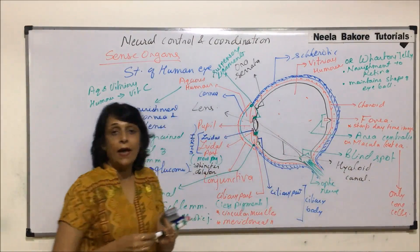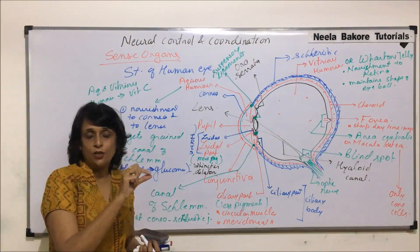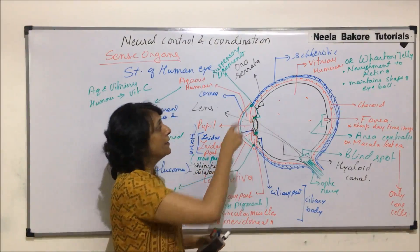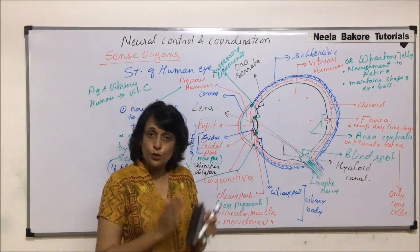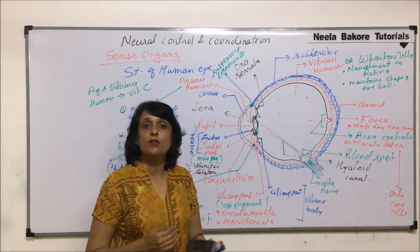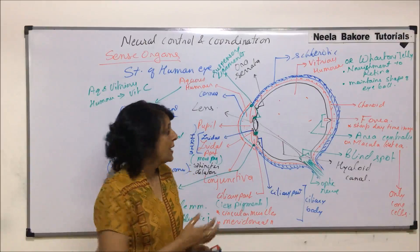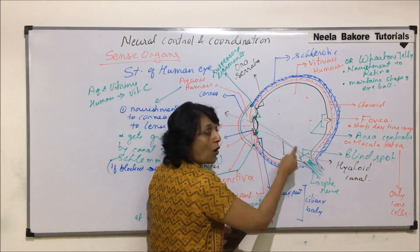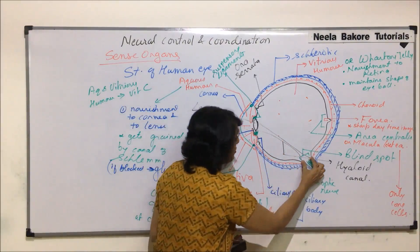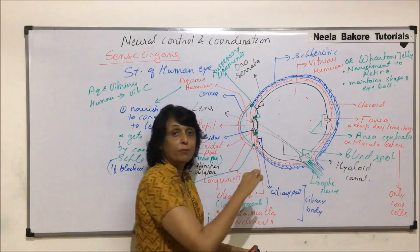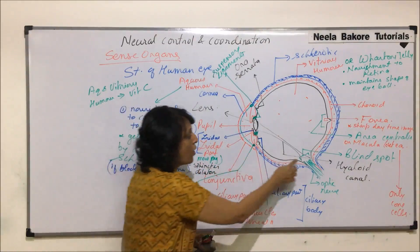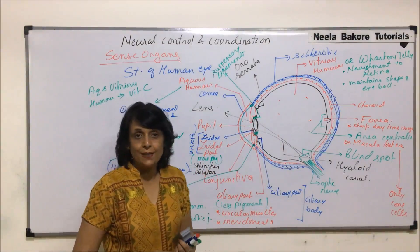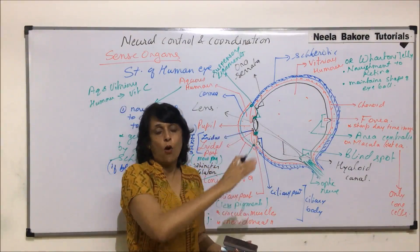Vitreous humor has three names: vitreous humor, Wharton's jelly, and vitreous body. Within this vitreous body, there is a transparent canal — the hyaloid canal — which runs from the region where the optic nerve emerges, that is the blind spot, to the base of the lens. So we have now seen all the structures of the eye.